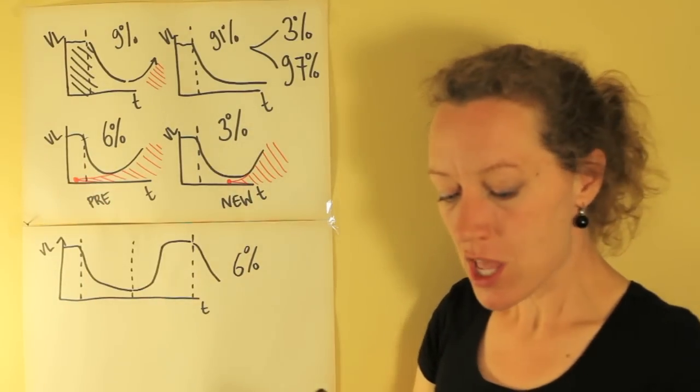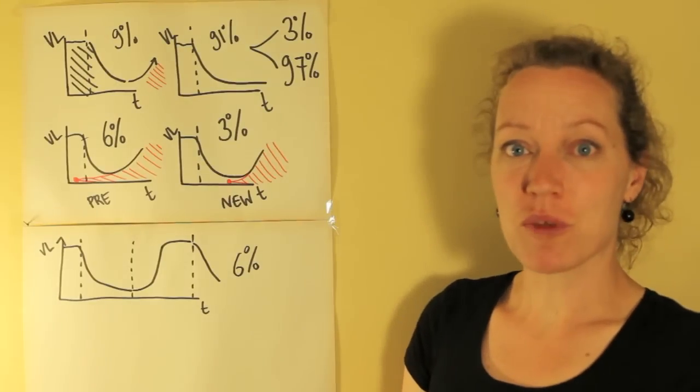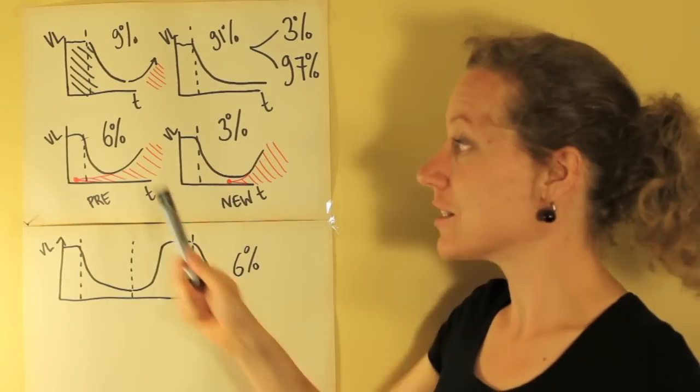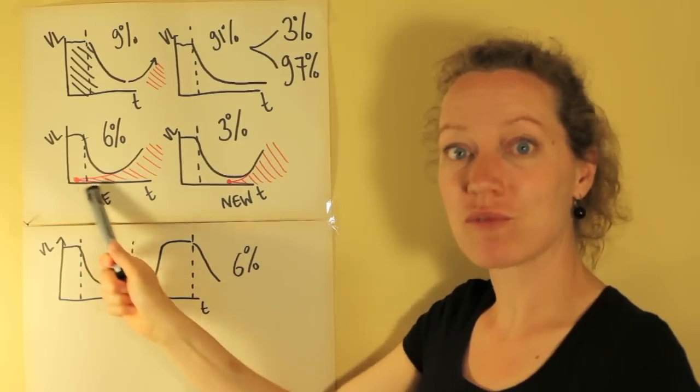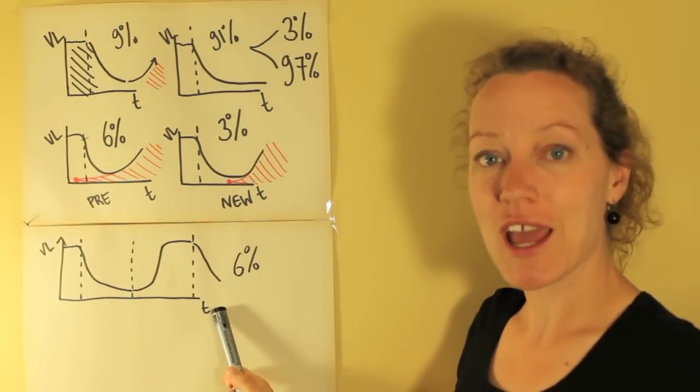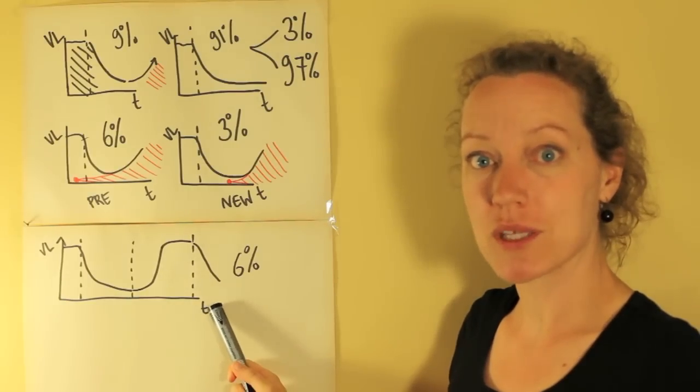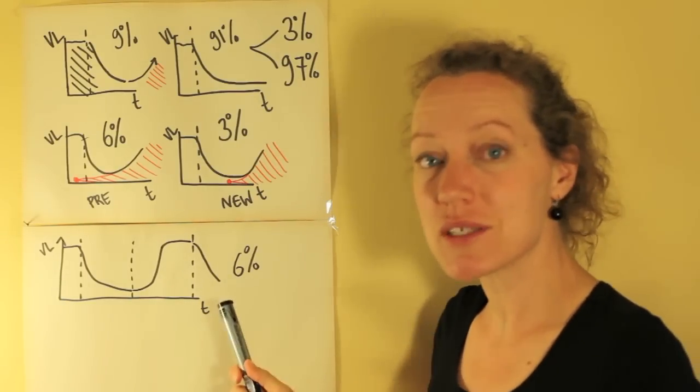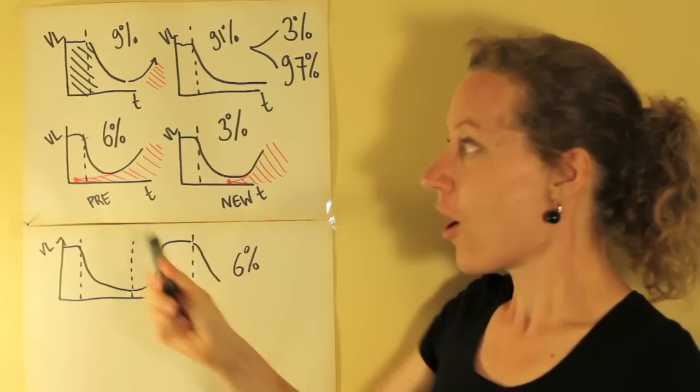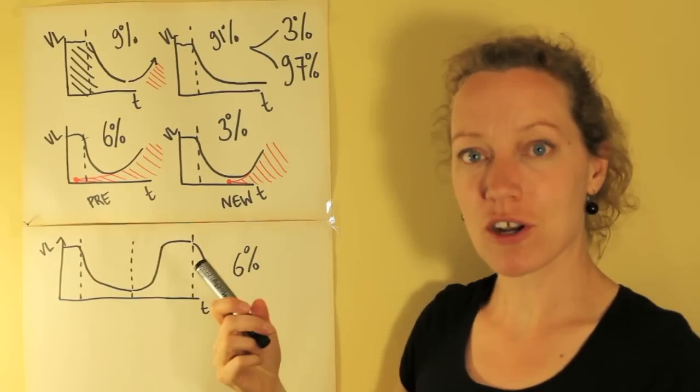So what I have found is that starting of treatment is risky for drug resistance and this is true for when treatment is started for the very first time and it is also true when treatment is started after an interruption of a few weeks. And so this means that if we want to prevent the evolution of drug resistance, we need to focus on these risky moments, the start of treatment.